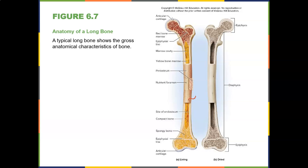Here's the anatomy of the long bone. At the end you have articular cartilage — like tread on a tire. When you lose all the articular cartilage, that's when people say they're 'bone on bone.' There's red bone marrow, the epiphyseal line which is the growth plate, the marrow cavity, and yellow bone marrow. There's a periosteum cover, a nutrient foramen delivering nutrients to the bone, compact bone on the outer surface, and spongy bone on the inside.